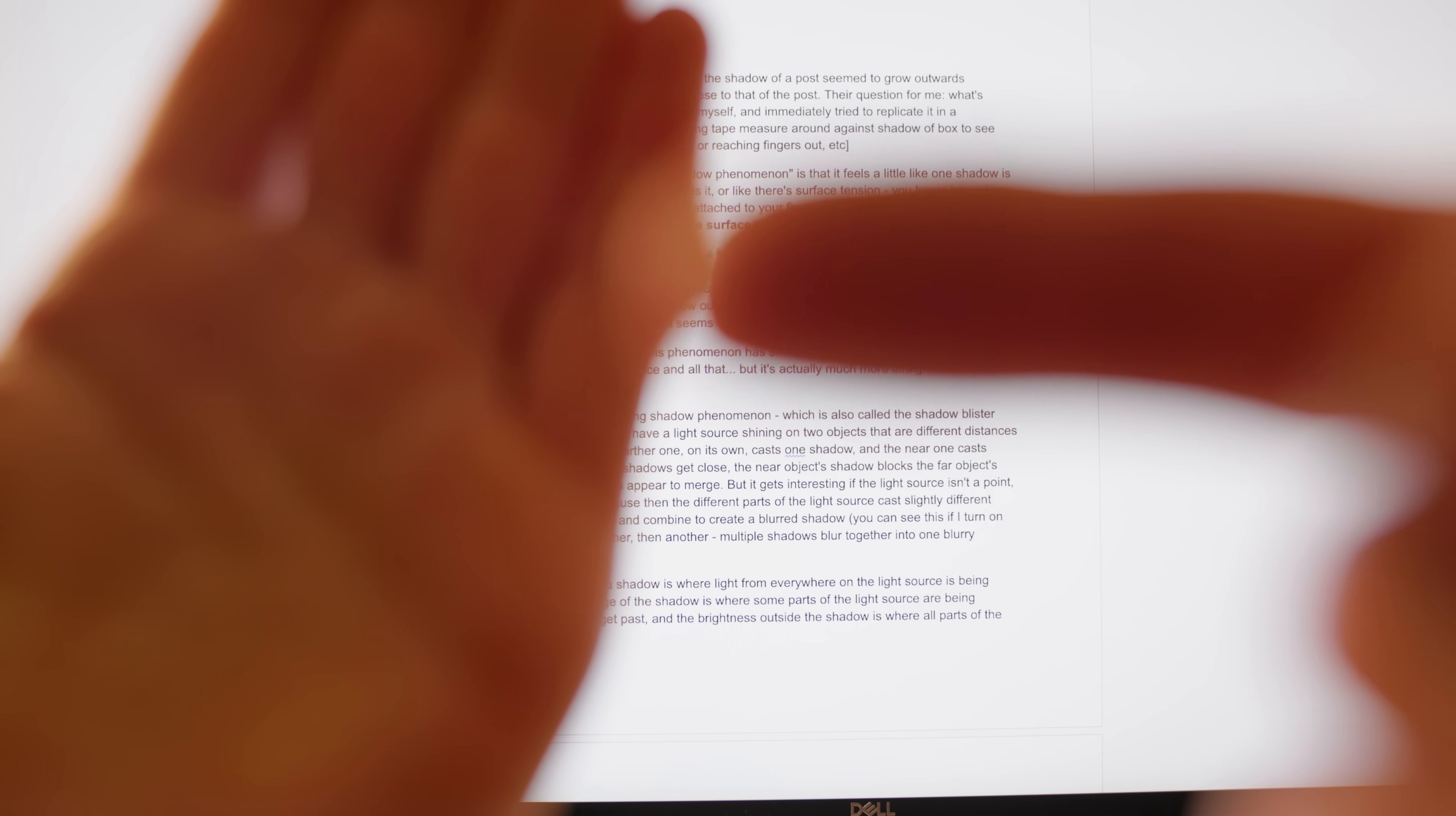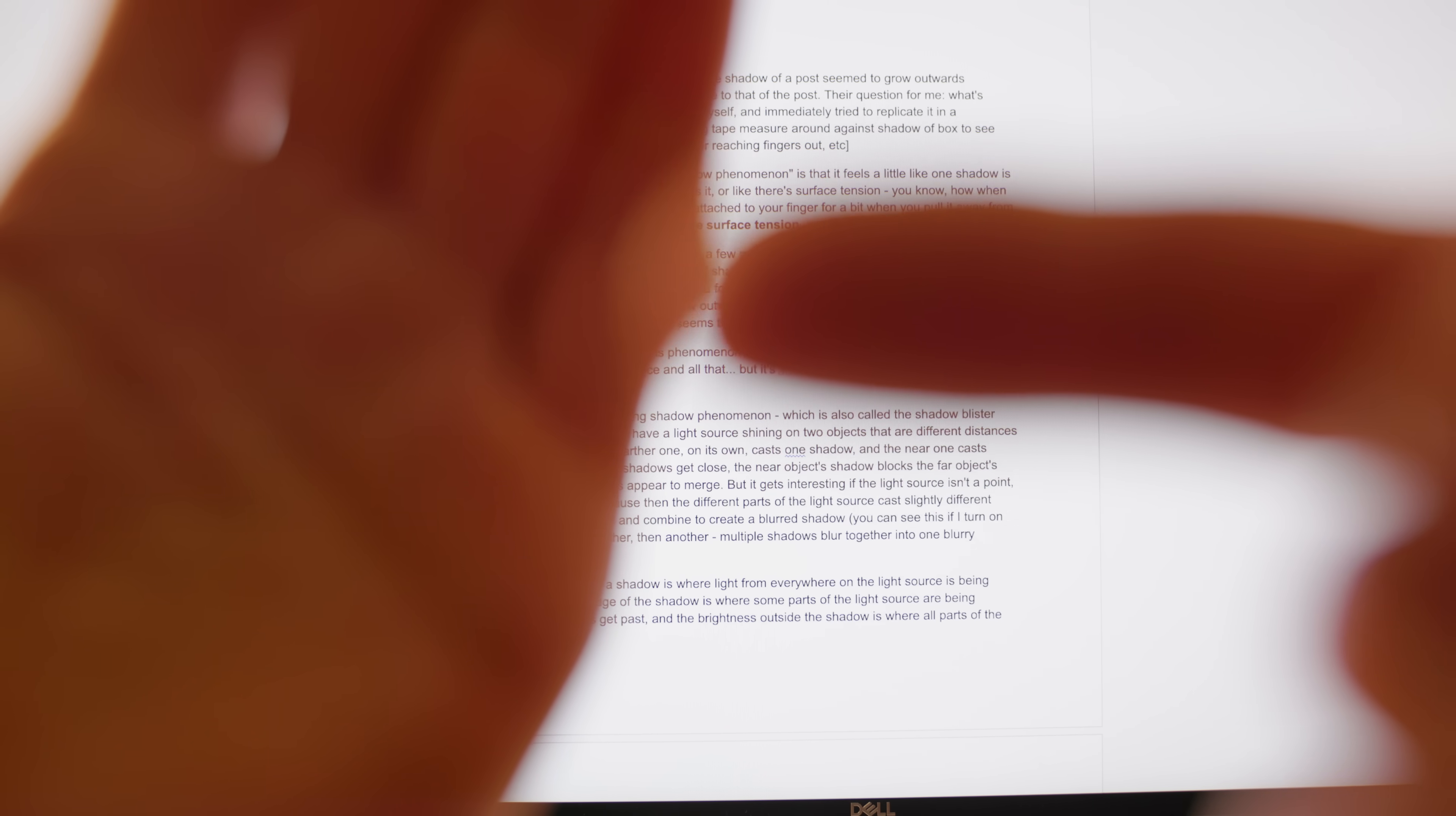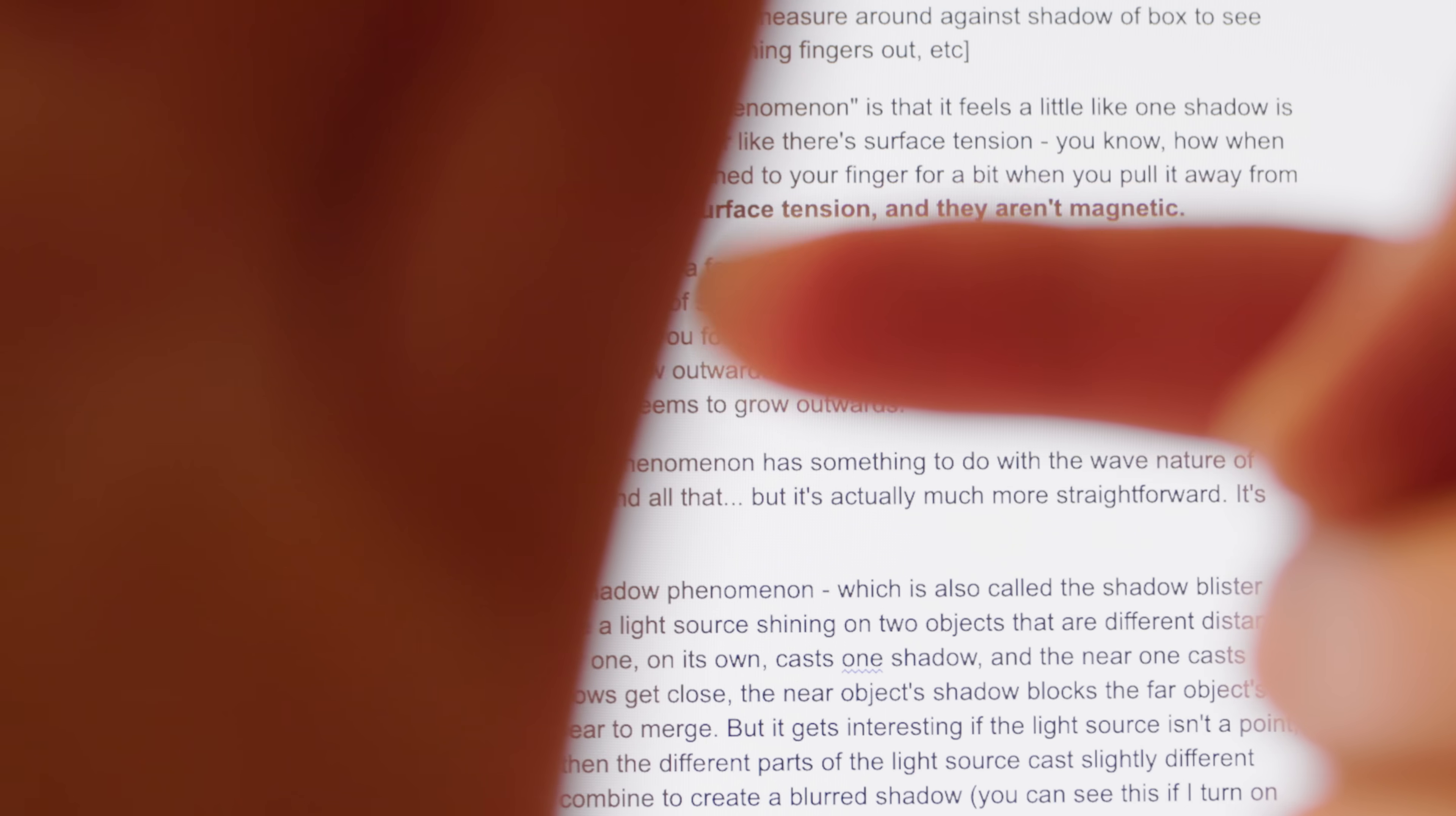Before I get to the explanation, here are a few more cool examples where the same phenomenon happens, except instead of shadows, it's out of focus objects in an image. You can literally see this with your own eyes if you focus on something far away and hold a finger in front of your hand. The hand seems to grow outwards towards the finger. But if I hold my finger behind my hand, it's the finger that seems to grow outwards.